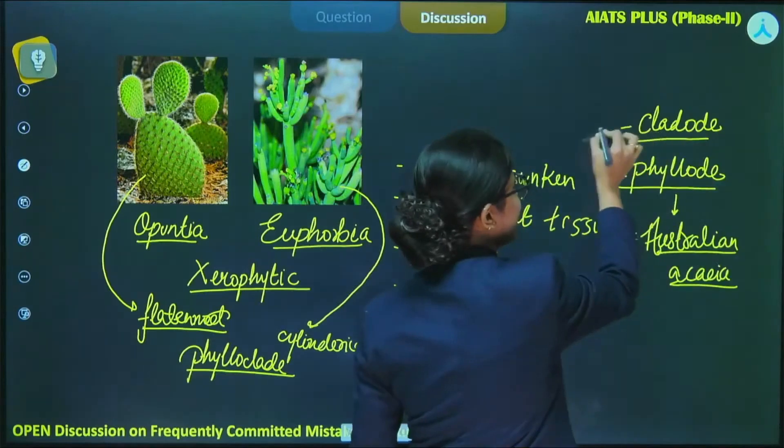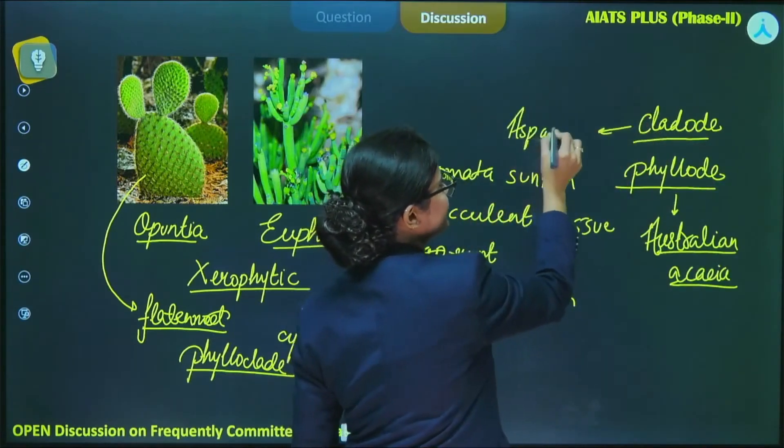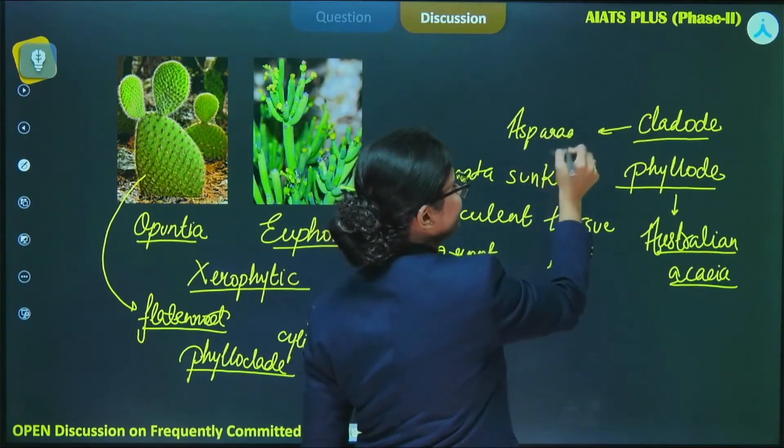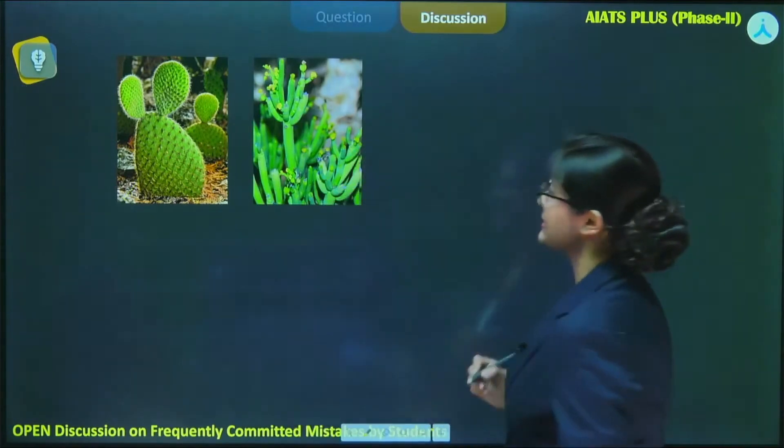Cladode can be observed in Asparagus. Now let's get back to the question which asks about the common features.